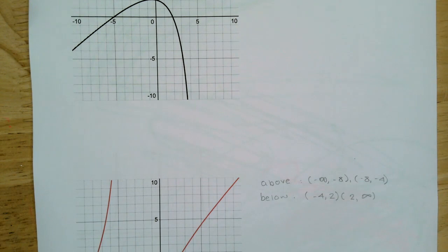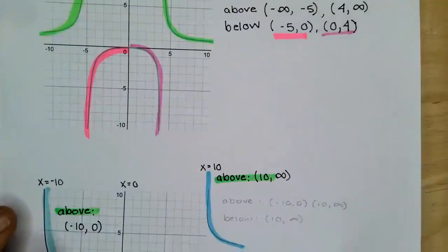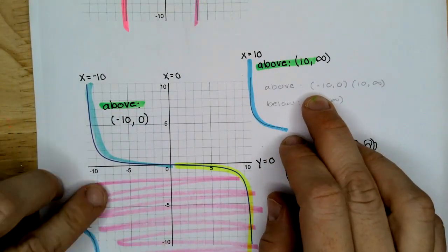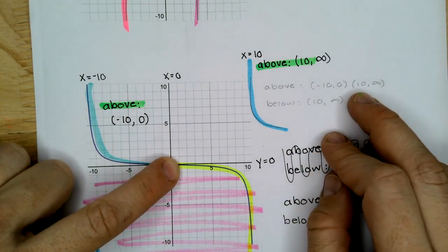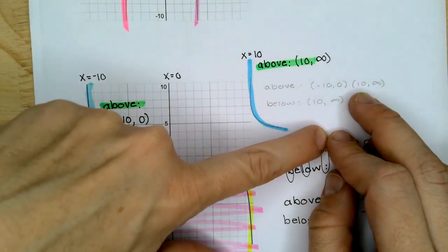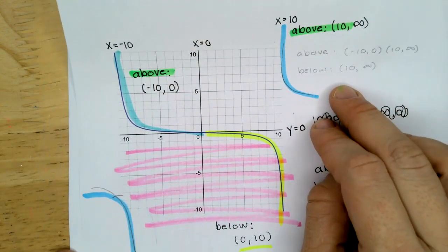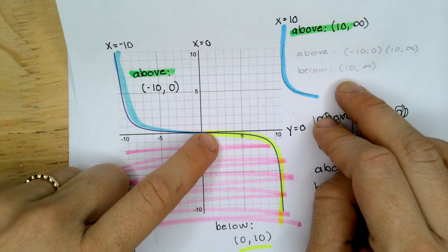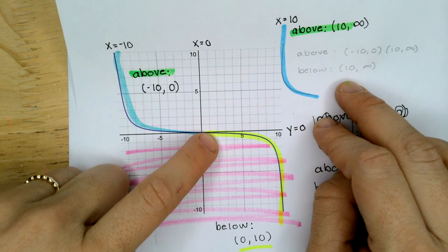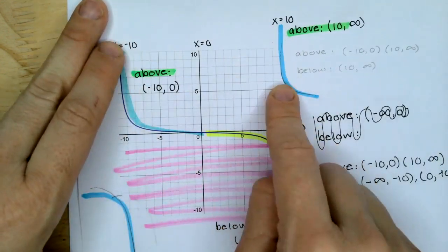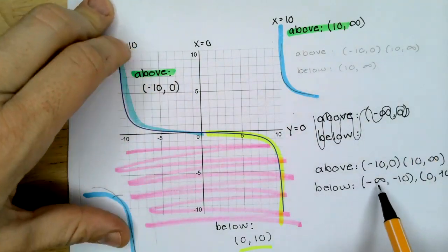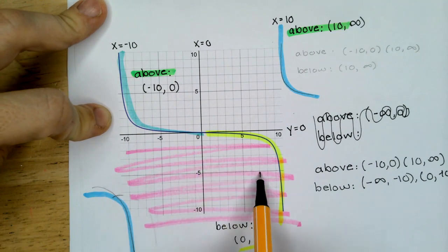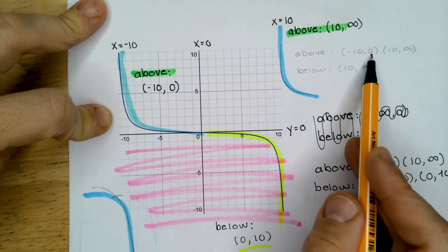We did not talk about what you did. For that one, you said we were above between negative ten and zero — I agree — and above between ten and infinity — I agree. You said we were below between ten and infinity. Well, we can't write ten to infinity as both above and below. So below, I would say, is negative infinity to negative ten and zero to ten. But you had both correct.